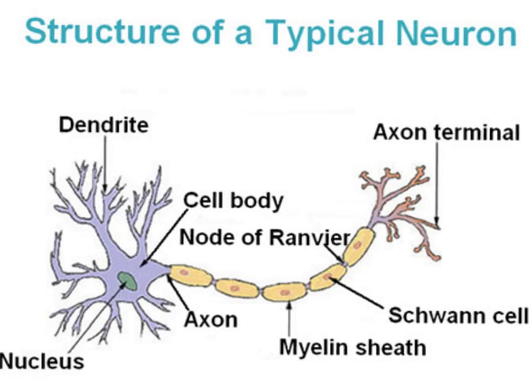One is the nodes of Ranvier, and the other is the myelin sheath. The myelin sheath is an outgrown type of glial cells that help for the central proper functioning of the nervous system. In the nodes of Ranvier, or myelin sheath gap, the axonal membrane is uninsulated and therefore capable of generating electrical activity.